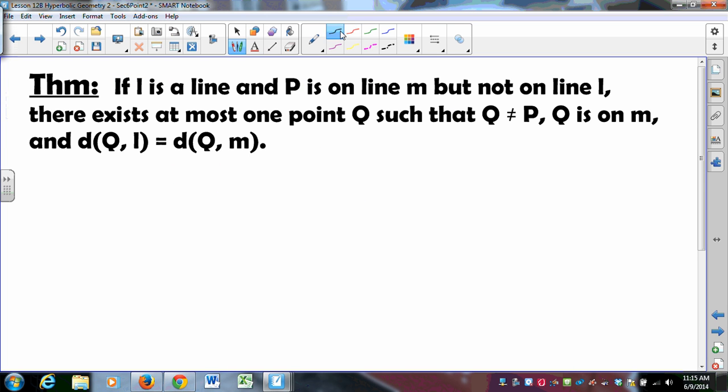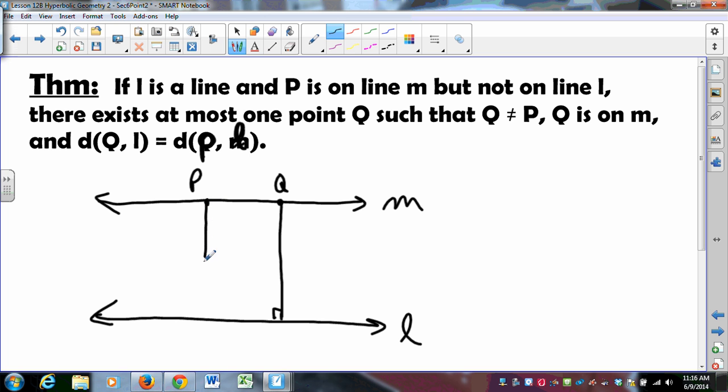First, if L is a line and P is on line M but not on line L, there exists at most one point Q such that Q is not P, Q is on M, and the distance from Q to L is equal to the distance from P to L.